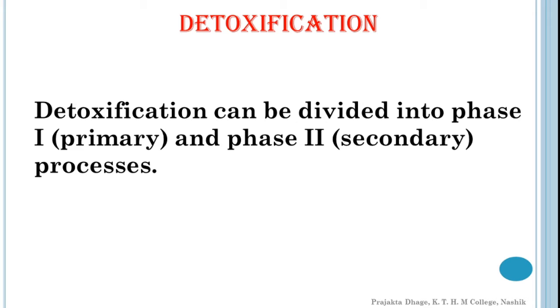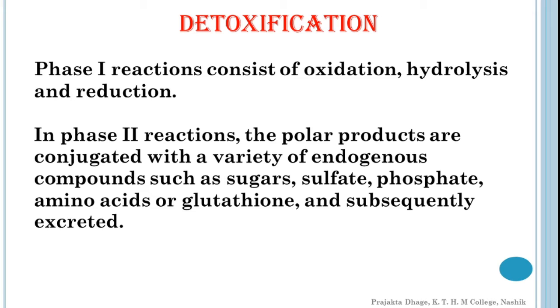The phase 1 reaction consists of oxidation, hydrolysis and reduction. The phase 1 metabolites are sometimes polar enough to be excreted, but usually are further converted by phase 2 reactions. In phase 2 reactions, the polar products are conjugated with a variety of endogenous compounds such as sugars, sulfates, phosphates, amino acids or glutathione and subsequently excreted. Phase 1 reactions usually are responsible for decreasing biological activity of toxicants and therefore the enzymes involved are rate limiting with respect to toxicity. In today's lecture, we are only going to focus on phase 1 reactions.